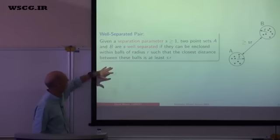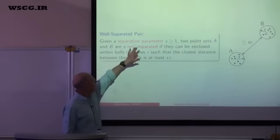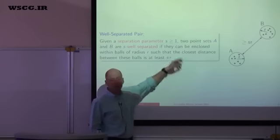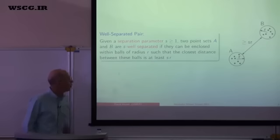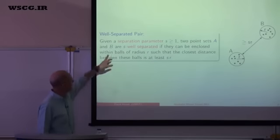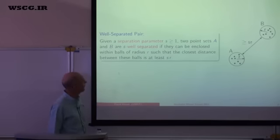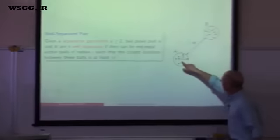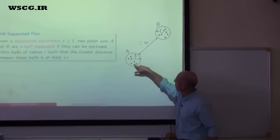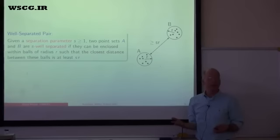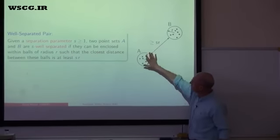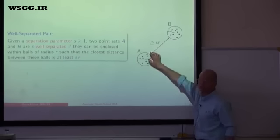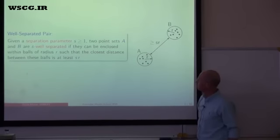Let me begin with the definition. The well-separated pair decomposition is based upon a parameter called S, which is the separation factor. We assume S is greater than or equal to one. We say two point sets A and B are S well-separated under the following circumstance: A and B can be enclosed in balls of radius R — and this applies in any dimension, these are Euclidean balls of radius R — such that the separation distance between them is at least S times R.